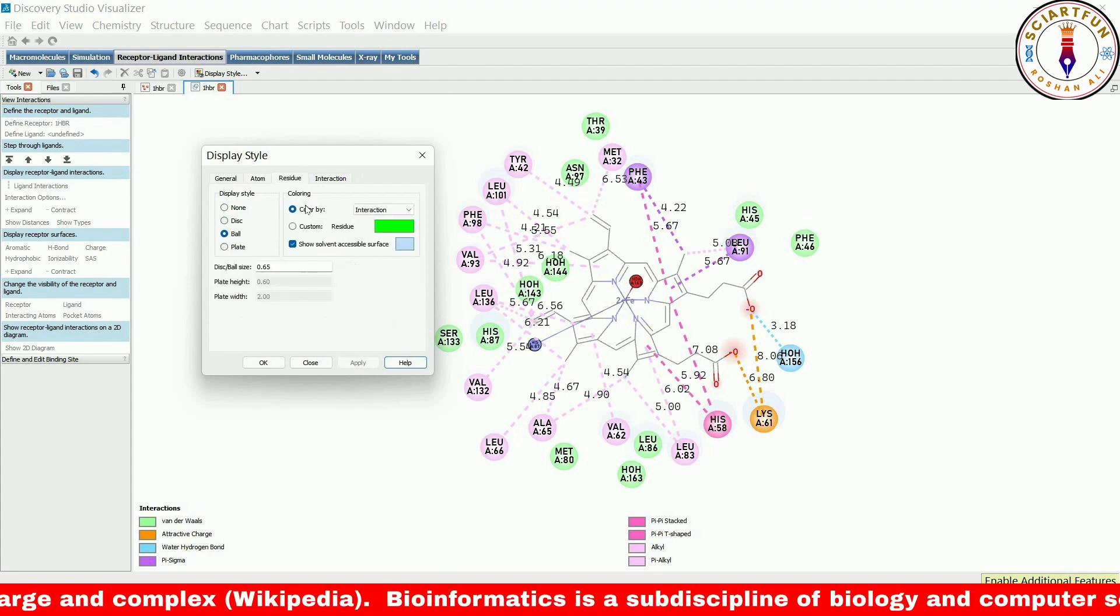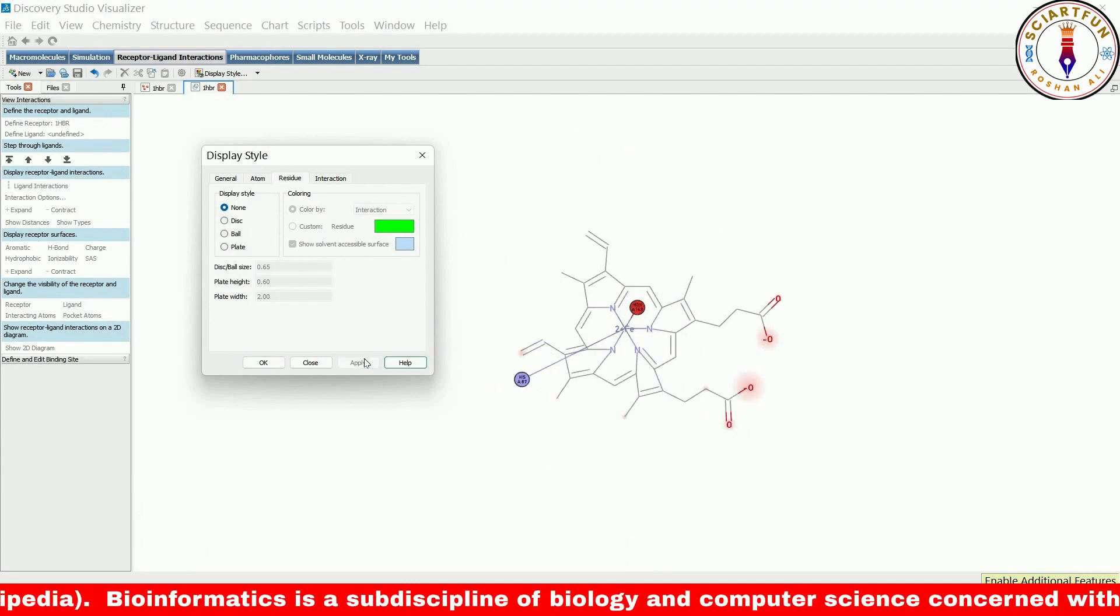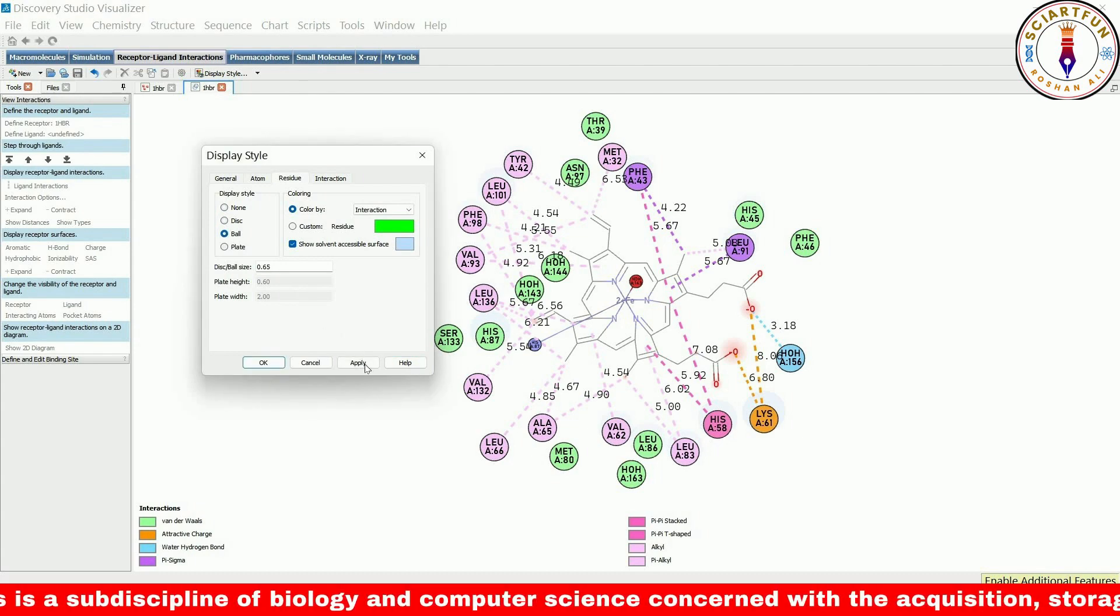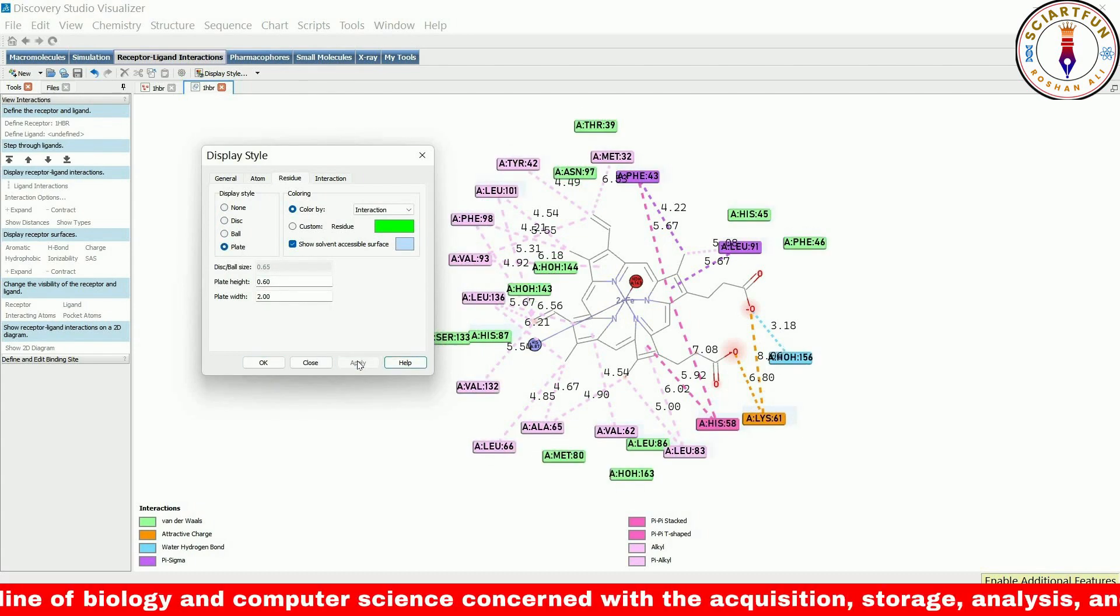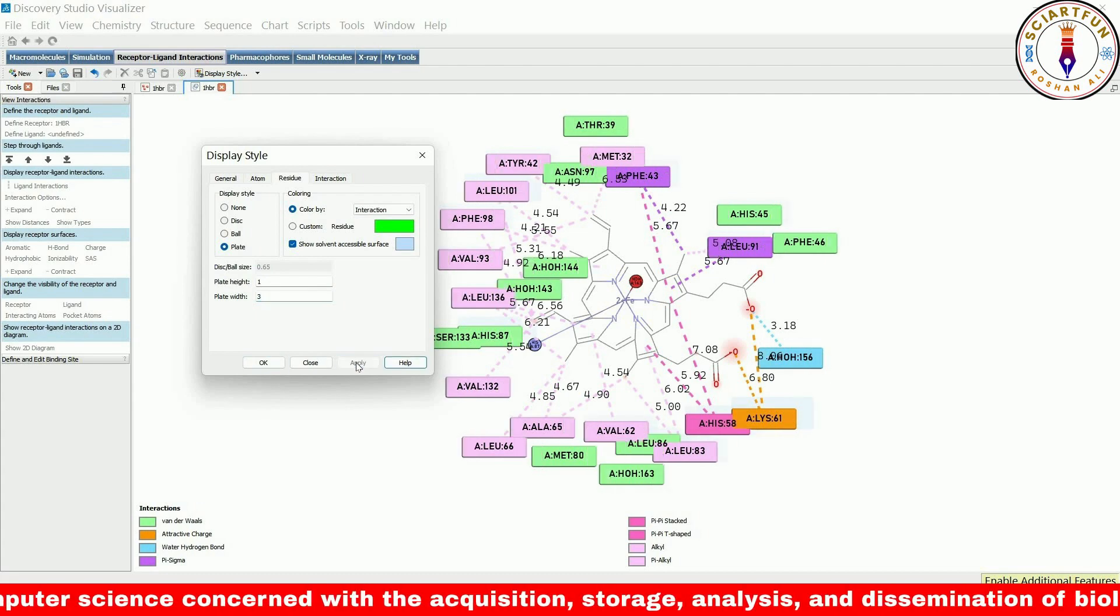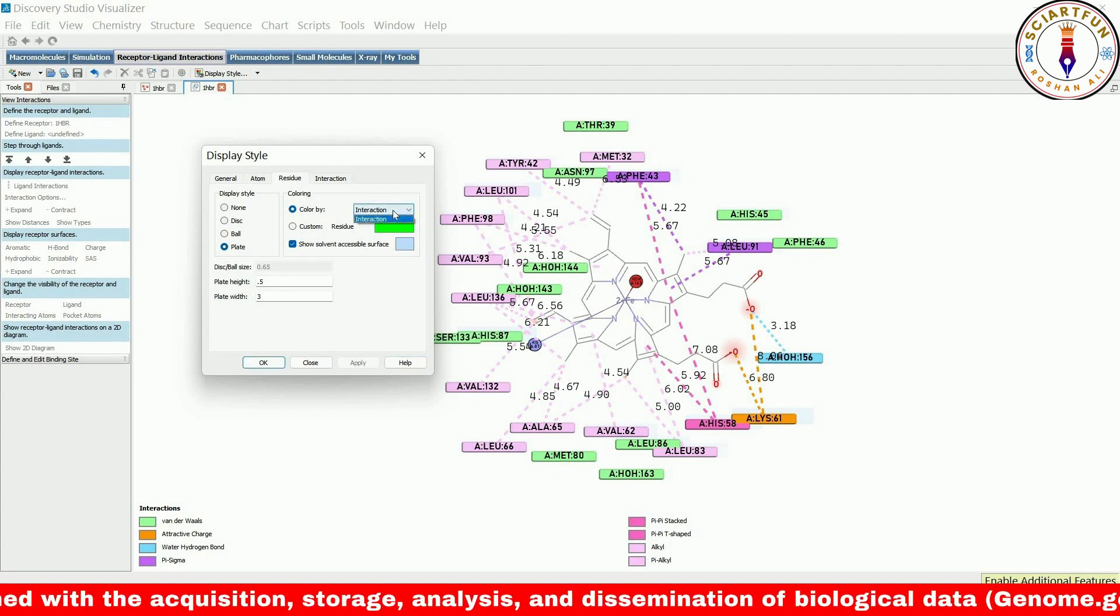In the residues tab, we can control the appearance of the residues that are making interactions with the ligand. We have options to display them as none, disc, ball, or plate. We can also change the width and length of the plates and control the color of the residues.